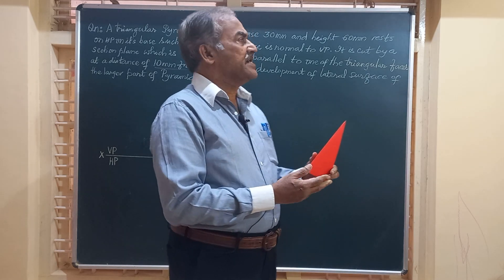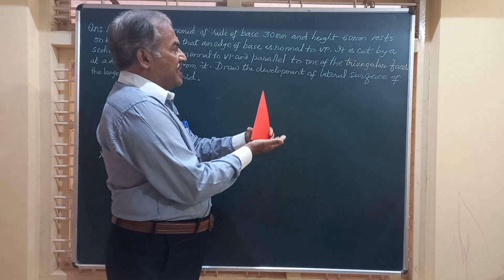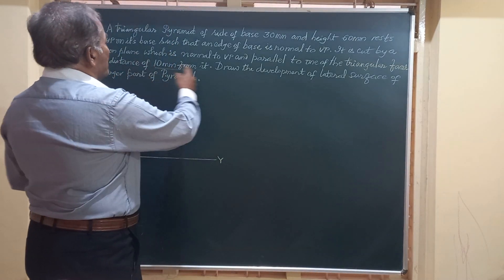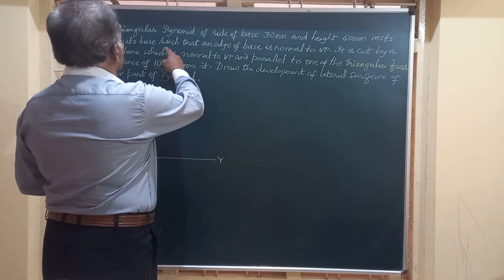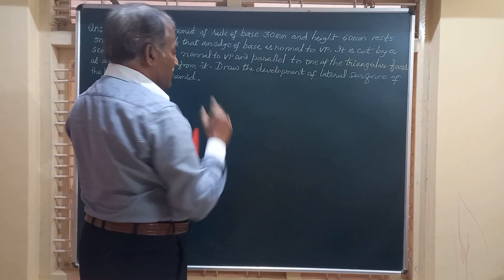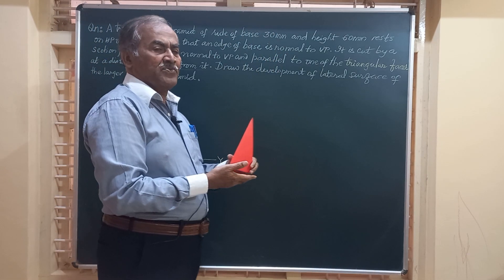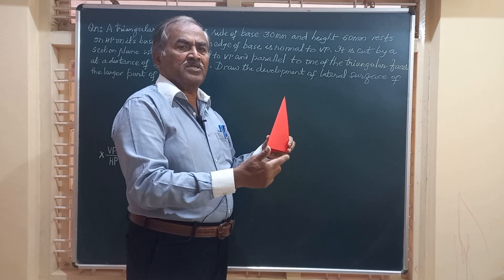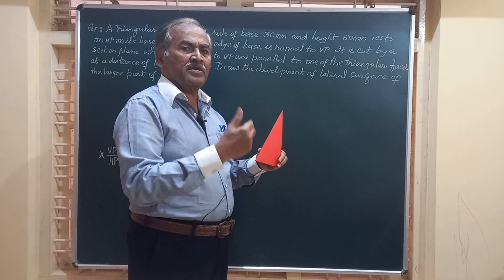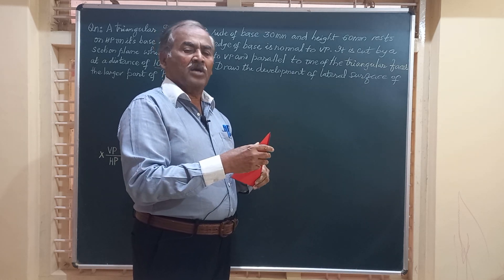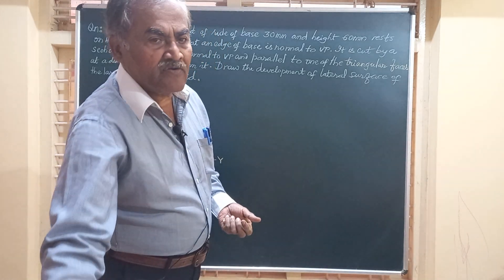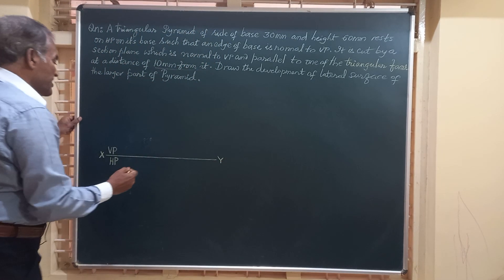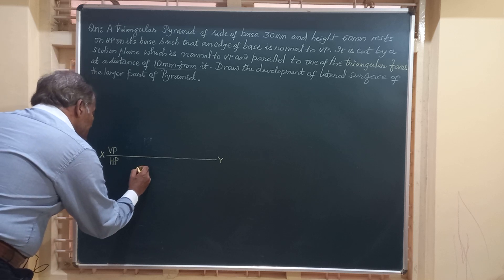The pyramid is resting on its base, so that an edge of the base is normal to the VP. In the top view, one of the base edges AB, BC, or CA should be perpendicular to VP. We will obtain the top and front views of the solid to the given dimensions.